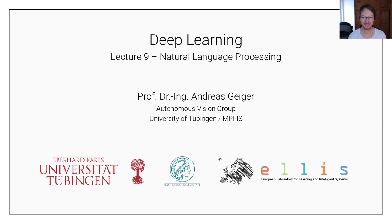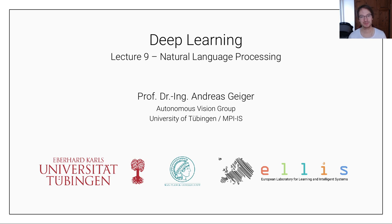Hey and welcome to the ninth lecture of this deep learning course. Today we're going to be talking about natural language processing. In previous lectures we have talked about convolutional neural networks, which are an ideal architecture for image processing, and in the last lecture we talked about recurrent neural networks and feedforward autoregressive models for sequence processing. Natural language is an ideal application for these types of models, so I thought it would be good to take a closer look into some of these models with a lecture dedicated to this particular topic.